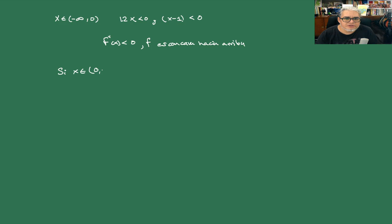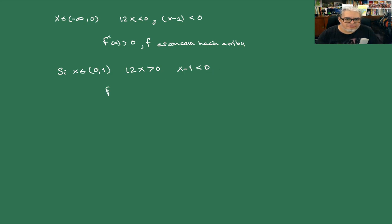Si x está entre 0 y 1, entonces 12x > 0 pero x - 1 < 0. El producto es negativo, entonces f''(x) < 0 y f es cóncava hacia abajo.